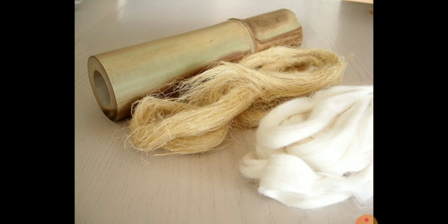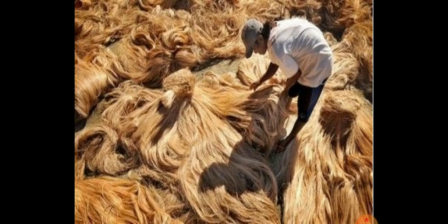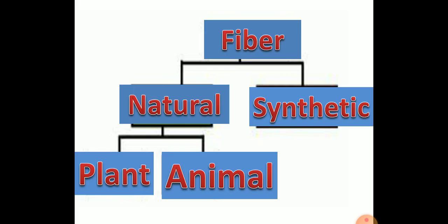Fibers can be described as strands of some material. They are the raw material from which fabric or textiles for our clothes is prepared. Fiber is basically of two types: natural fiber and synthetic fiber. Natural fiber is further of two types: plant fiber and animal fiber.